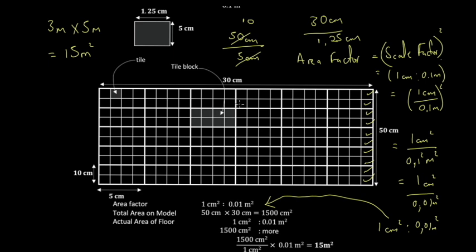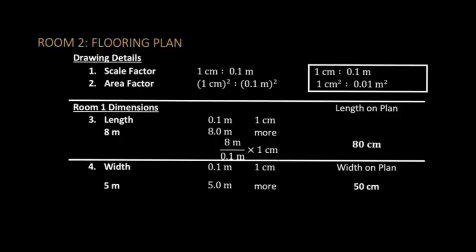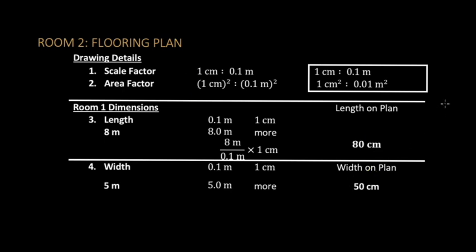You've demonstrated using the scale on paper how to get the actual area — you can do the same for the other room. The other room was the bedroom; this one is the sitting room, which is bigger. The same area factor we used previously applies. Using simple proportion again, we get 80 centimeters and 50 centimeters for the sitting room on the plan.